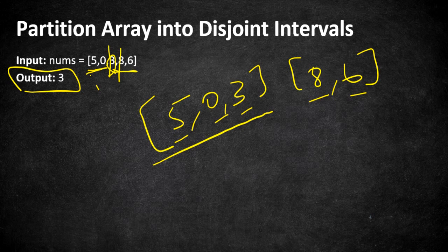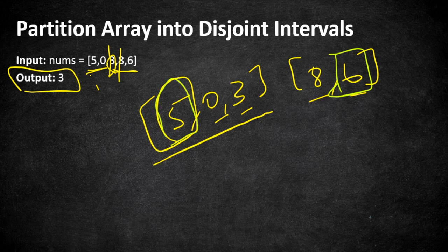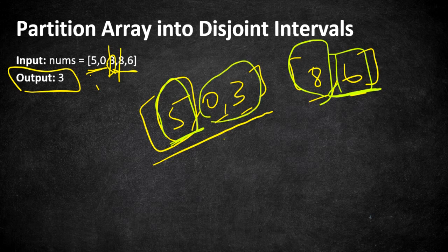The approach is to find the index where all elements to the right are greater than all elements to the left. The trick is we don't need to compare all elements — we can pick the maximum value in the left subarray and the minimum value in the right subarray and check if max(left) is less than min(right). If the minimum of the right is higher than the maximum of the left, then all elements satisfy the condition and we've found our partition.